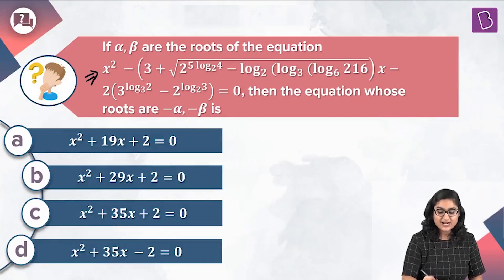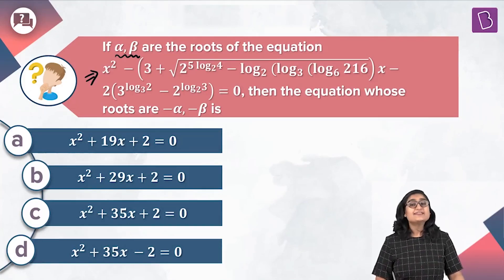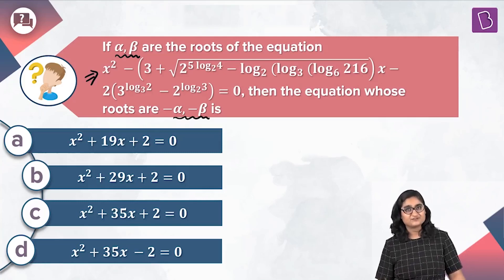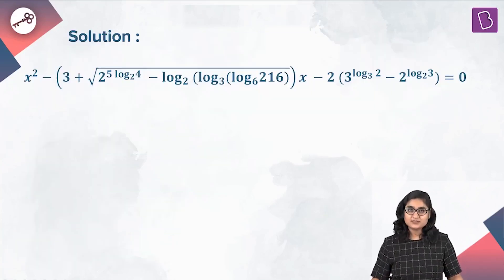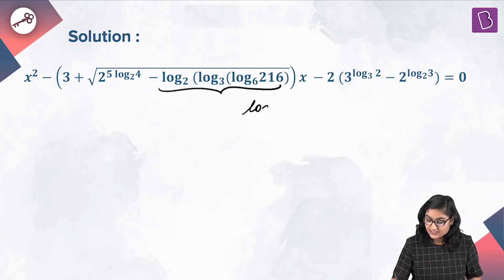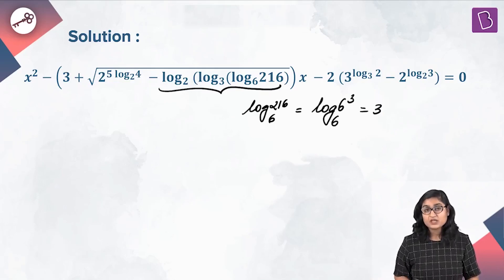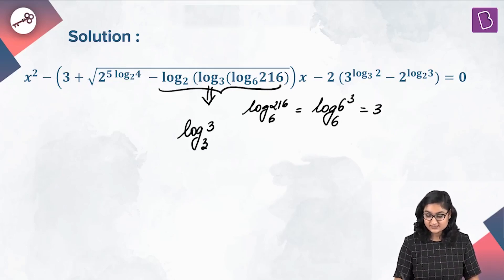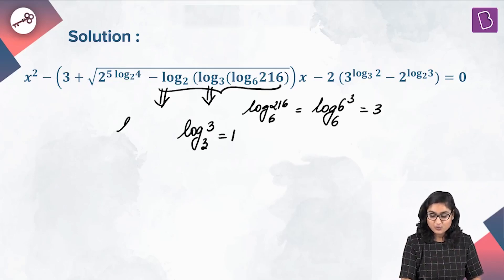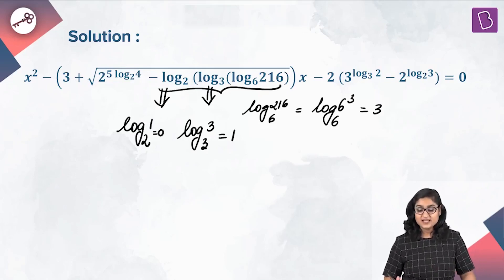In this question, we have been given a quadratic equation in x containing different log terms. It's also given that alpha and beta are the roots of this quadratic equation. Then we have to frame a quadratic equation whose roots are given by negative alpha and negative beta. We are going to compress this big quadratic equation into a smaller one using different properties of logarithm, starting with the triple log.